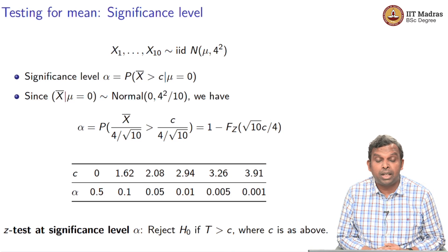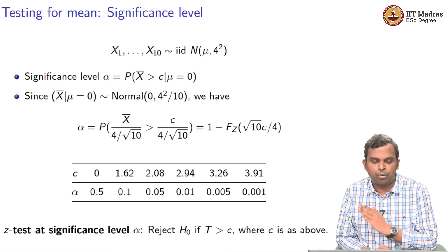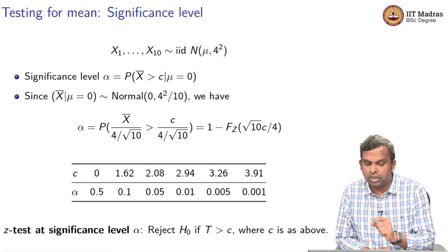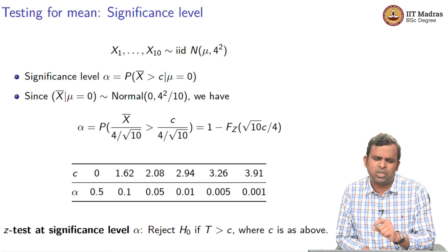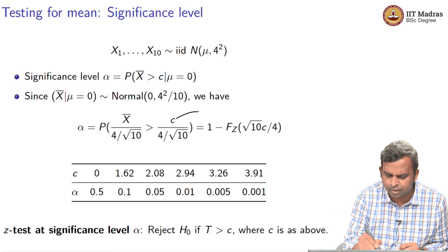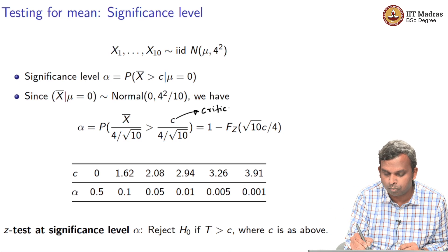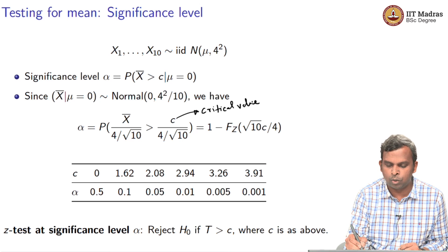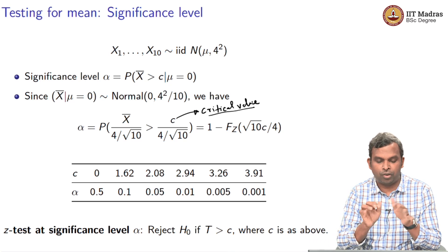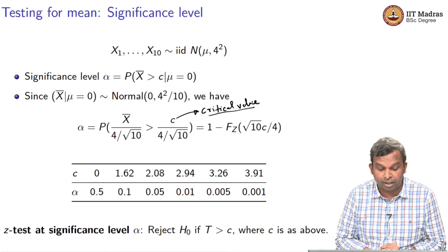When you are testing for the mean, there is a very simple formula between the significance level alpha and this value C. This value C has a name — it is called the critical value. You will see this terminology being used quite often, and this is the way in which you determine the critical value.